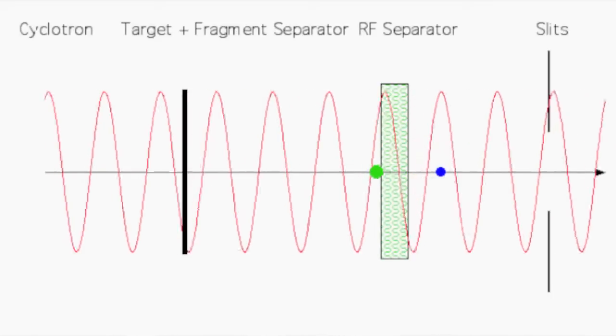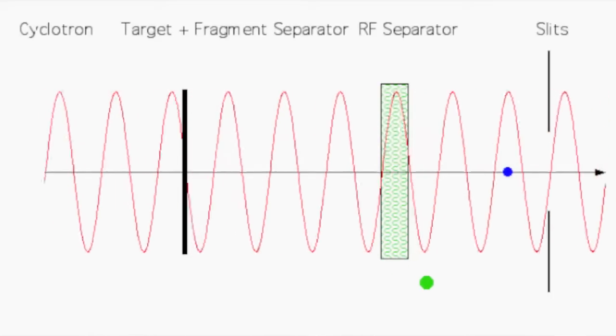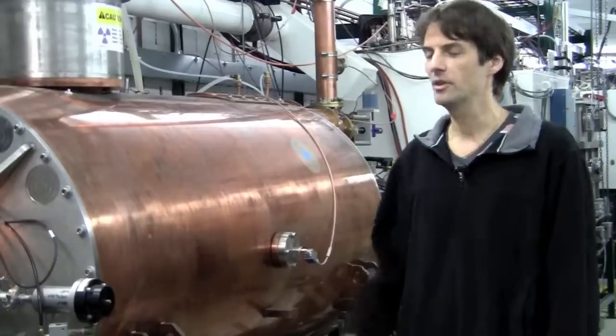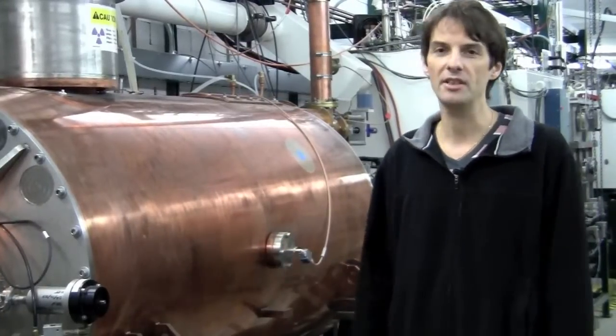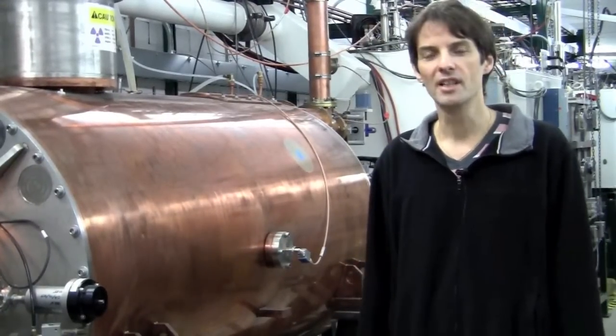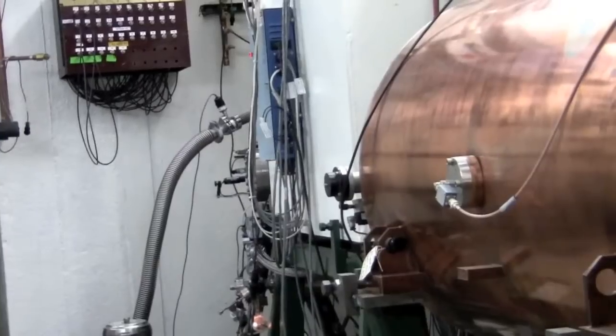The unwanted particles are stopped in a set of slits which are located downstream of the cavity, while the isotopes of interest continue on to the experimental station.